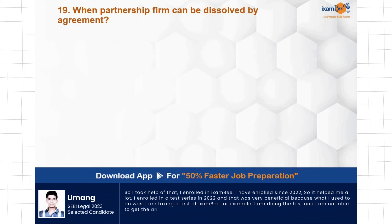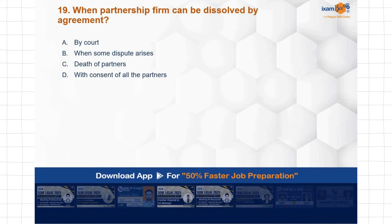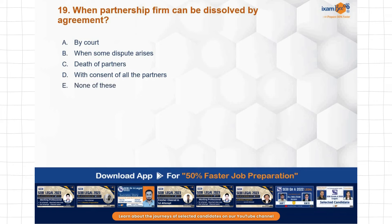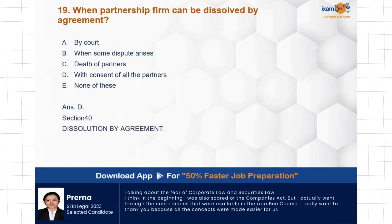Question: When can a partnership firm be dissolved by agreement — by court when some dispute arises, death of the partners, with consent of all the partners, or none of these? The correct answer is D — with consent of all the partners. Section 40 covers dissolution by agreement.